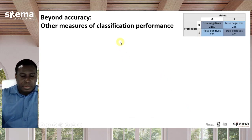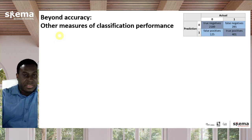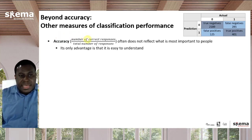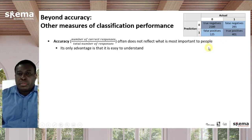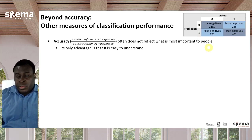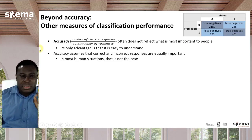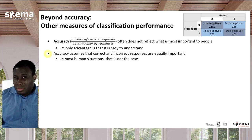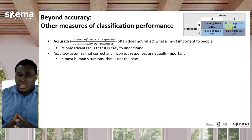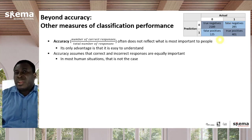Although accuracy is fairly simple, it's important to understand that it is not the only, and not even the most important, measure of classification model performance. Accuracy — the number of correct responses (true negatives plus true positives) divided by total responses — often does not reflect what is most important to people. Its main advantage is that it's easy to understand, but it has a fundamental assumption: that correct and incorrect responses are equally important. This is often not true. For businesses, it's usually more important that a customer buys — you want to spend effort on those who would buy — you wouldn't consider both outcomes equal.